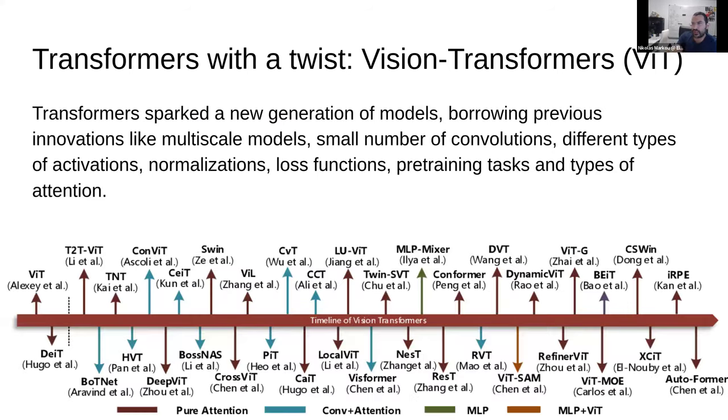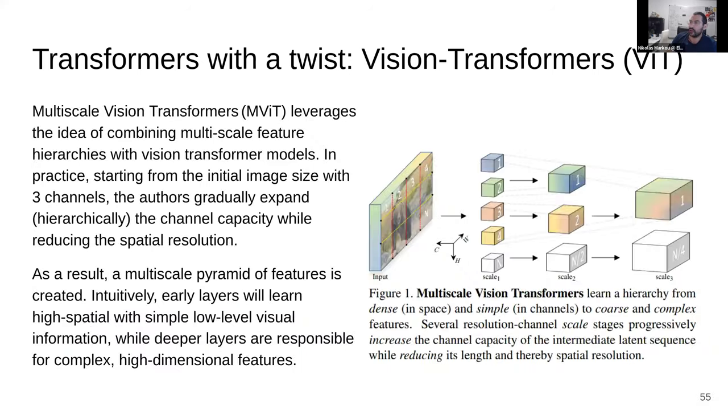The transformer sparked a new generation of models borrowing previous innovation like multi-scale models, small number of convolutions, projections and then the flattening and the projection, different type of activations, normalizations, loss functions, pre-training tasks, relevant tasks, and types of attention. You can see here the mad rush. Again, everybody rushes to do the hot shiny thing. They were pretty good to be honest. And recent innovation is a multi-scale vision transformer. They took this from U-Net where you have stacked, you go deeper and deeper, scaling up the patches.